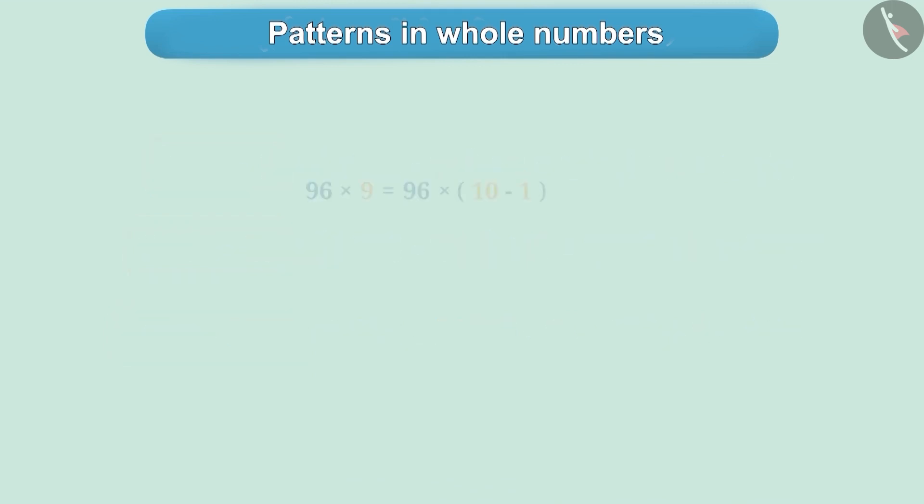Similarly, we can observe the pattern for multiplication. Pause the video and try to understand this pattern. Here, instead of multiplying 9, 99, 999, we have multiplied 10 minus 1, 100 minus 1, and 1000 minus 1.